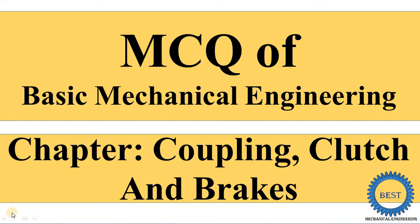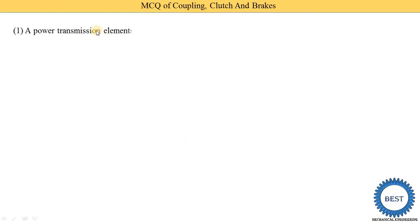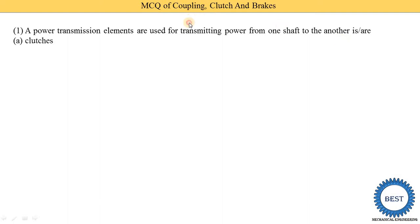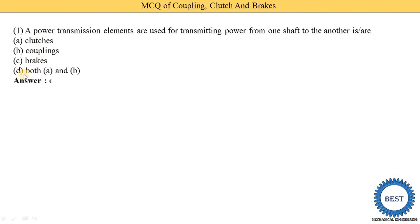In this video, I explain the MCQ of coupling, clutch, and brake. The first MCQ: a power transmission element used for transmitting power from one shaft to another shaft is known as — option A: clutch, option B: coupling, option C: brake, option D: both A and B. The clutch is used to engage and disengage two shafts and is also used for power transmission. Coupling is also used for power transmission from one shaft to another. Brake is used to stop vehicles or reduce speed. So both A and B are correct — option D is the correct answer.